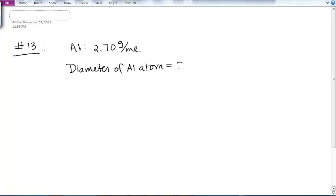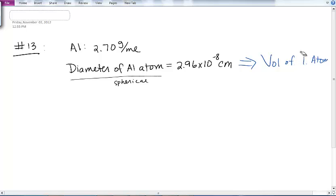...that's equal to 2.96 times 10 to the minus 8 centimeters. And as soon as I see this diameter of aluminum atom, and I know that they're spherical, right away I think, okay, I know what I can do with this. I can go ahead and find the volume of an aluminum atom. And that's probably going to be helpful down the road. So I'm starting to think that.